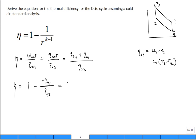So what we do is we replace this by 1 minus, and we have C sub V T 3 minus T 2. How about the numerator? It's going to be C sub V T 4 minus T 1. Can we cancel the CVs?